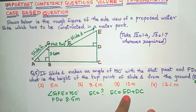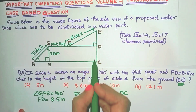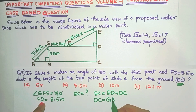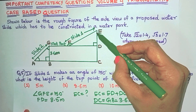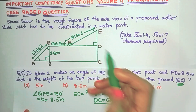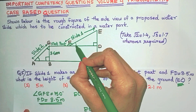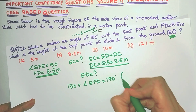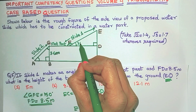If we find ED and DC, our job is done. DC is part of a rectangle, and in a rectangle opposite sides are equal, so DC = GB = 3.6 meters. Now ED is part of a right-angle triangle. FD = 8.5 is given. To find the angle EFD, we use linear pair: 150° + angle EFD = 180°, so angle EFD = 30 degrees.